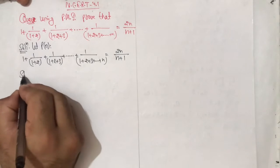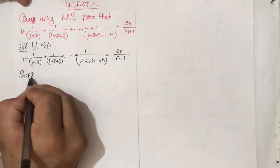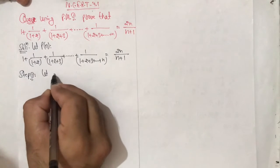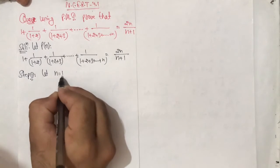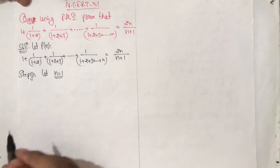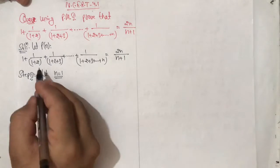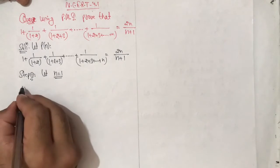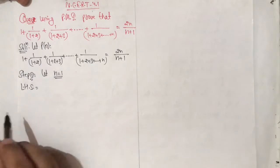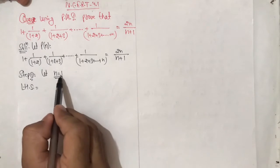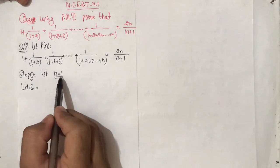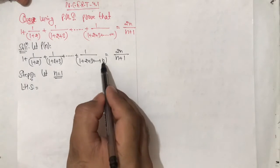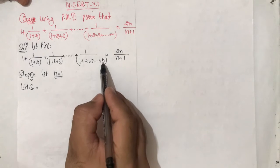Step 1: Let n equal to 1. We need to check whether both sides are equal. So LHS — left hand side — put the value of n as 1.